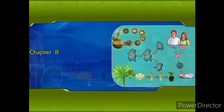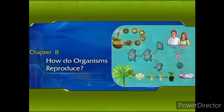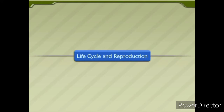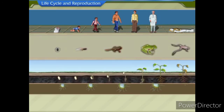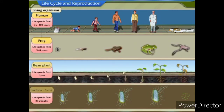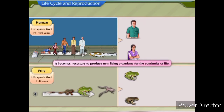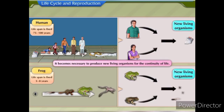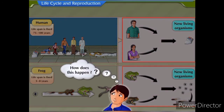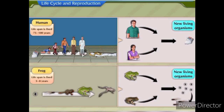Chapter 8: How Do Organisms Reproduce? Life Cycle and Reproduction. We all know that the lifespan of every organism is fixed, and it ultimately dies. Hence, it becomes necessary to produce new living organisms for the continuity of life. How does this happen? Let us understand this concept.